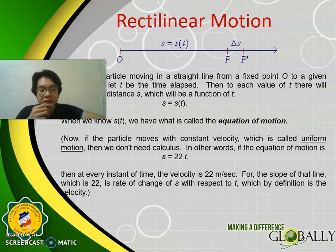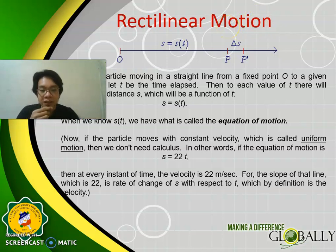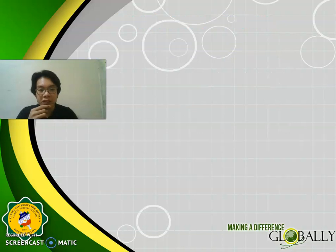If the particle moves with constant velocity — which is called uniform motion — then we don't need calculus. In other words, if the equation of motion is S = 22T, then at every instant of time, the velocity is 22 meters per second. The slope of that line, which is 22, is the rate of change of S with respect to T, which by definition is the velocity.